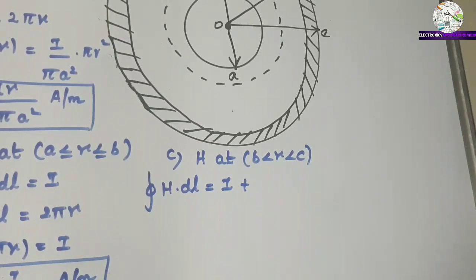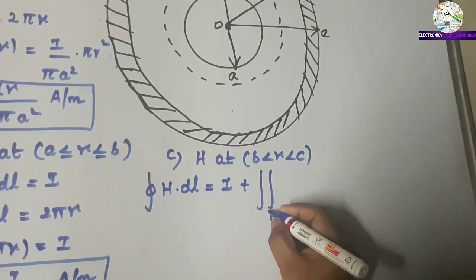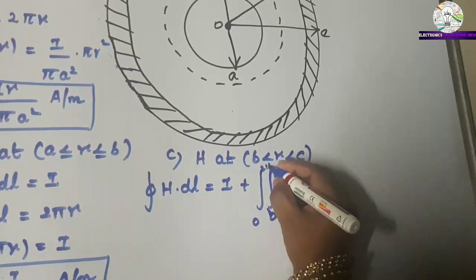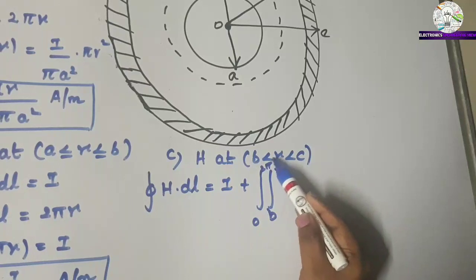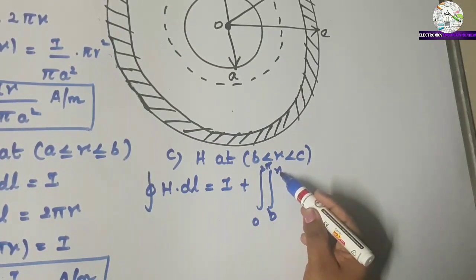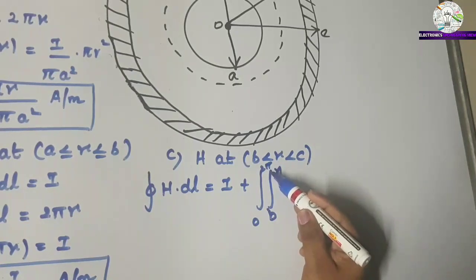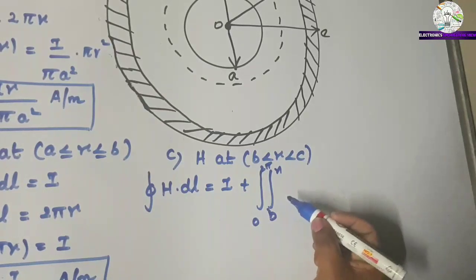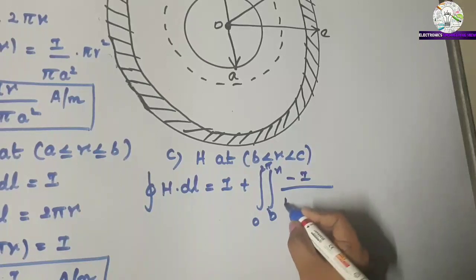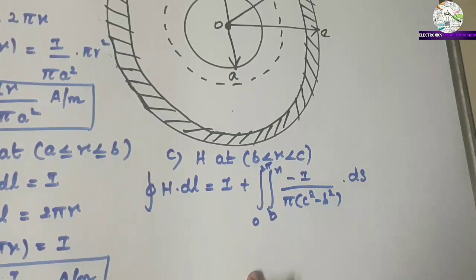For the coaxial cable, the differential elements are dR and r dφ. The double integral limits are from B to R for the inner integral and 0 to 2π for the outer integral, since 2π is the full angle for the circular conductor. The integrand is minus I divided by pi times (C squared minus B squared), times dS.